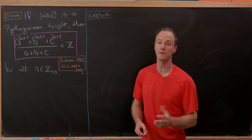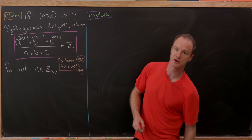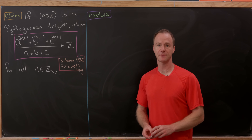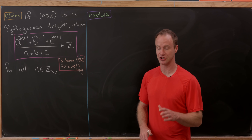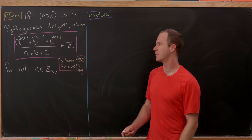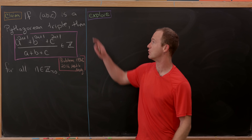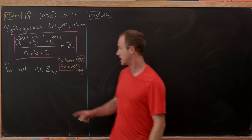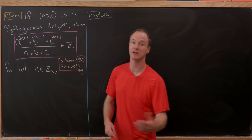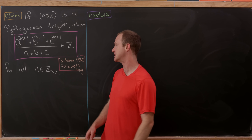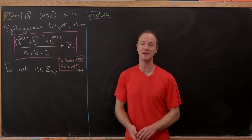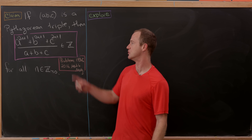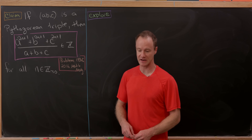Today I want to look at a really beautiful property of the Pythagorean triples that I learned about from a problem in Math Magazine. This is from a 2016 issue. It says that if you have a Pythagorean triple a, b, c, then a to the 2n+1 plus b to the 2n+1 plus c to the 2n+1 over a, b, c is an integer — meaning the numerator is a multiple of the denominator.